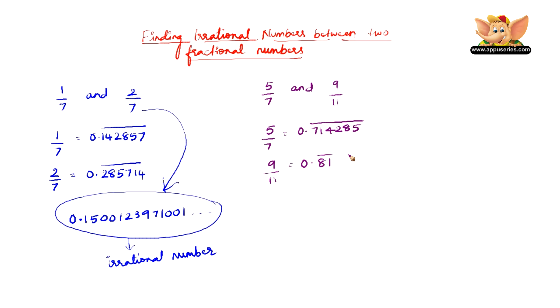All we have to do is find three irrational numbers greater than 0.714285 and less than 0.81, which is very easy.